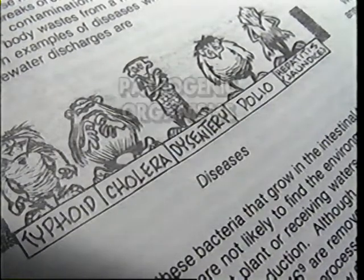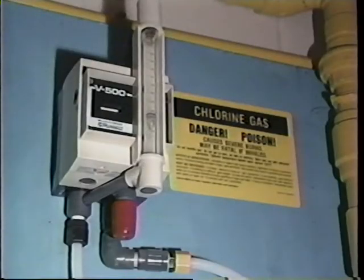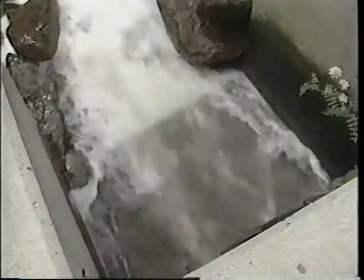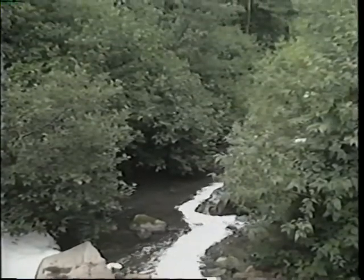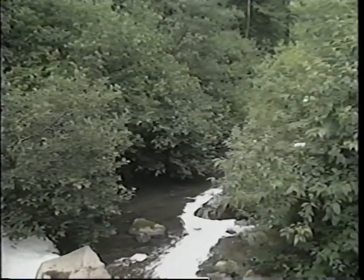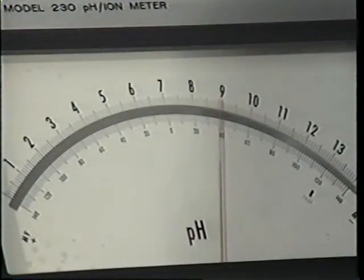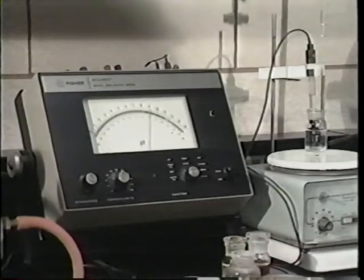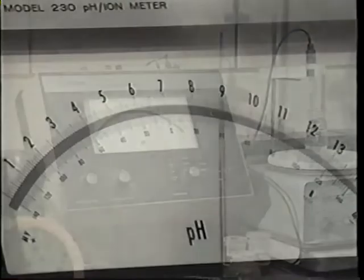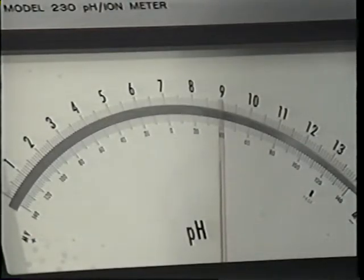The most common disinfection processes used today are chlorination, ozone, and ultraviolet light. Proper disinfection will result in a thorough kill of pathogenic bacteria in the treated wastewater. But even a safe, well-treated effluent can appear unattractive if its color and clarity is not similar to the receiving water. An accepted measurement of a waste's acid or basic condition is its pH. Before effluent is discharged, it should have a pH similar to that of the receiving water. Most commonly, NPDES permits call for an effluent pH of between 6.0 and 9.0.